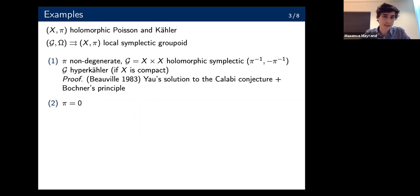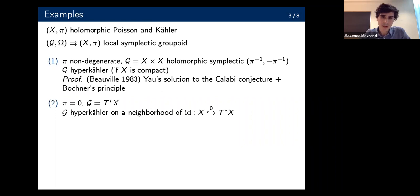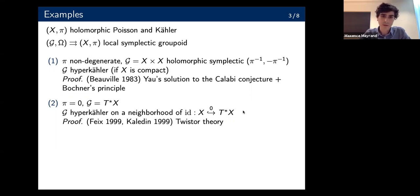At the other extreme, if you take the zero Poisson structure, then the cotangent bundle of X is a symplectic groupoid integrating it. There's a famous hyperkähler structure on a neighborhood of the zero section of the cotangent bundle of any Kähler manifold, and the zero section happens to be the identity section of this groupoid. That's due to Feix and Kaledin independently in 1999, and Feix's proof uses twistor theory. So at least at the level of local groupoid, we get a hyperkähler structure.